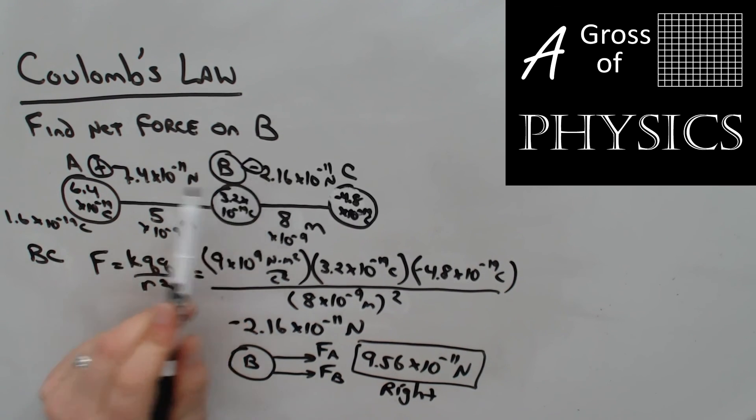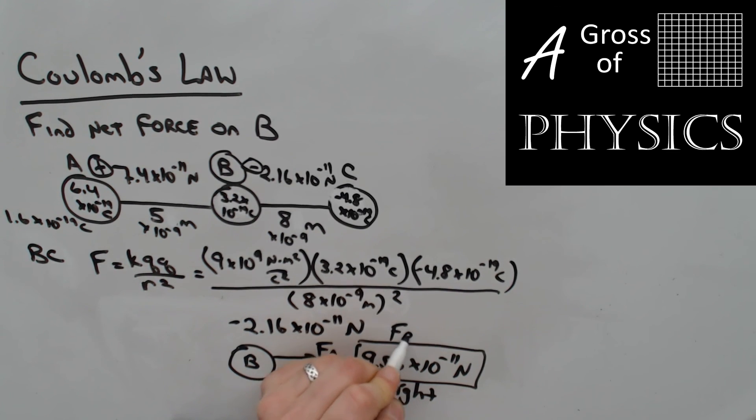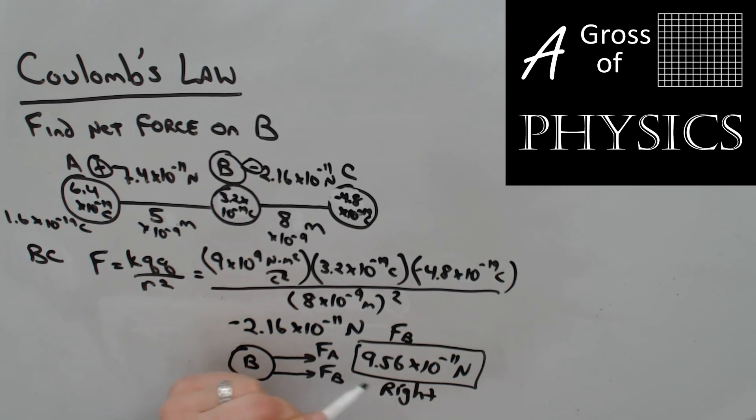Although we have the right signs when we deal with the Coulomb's Law equation, it only tells us whether they're attractive or repulsive. We have to go back to the real problem, the actual directions of the problem, in order to determine whether they push or pull the object in question. In this case, the force on B would be 9.56 times 10 to the negative 11 newtons to the right.